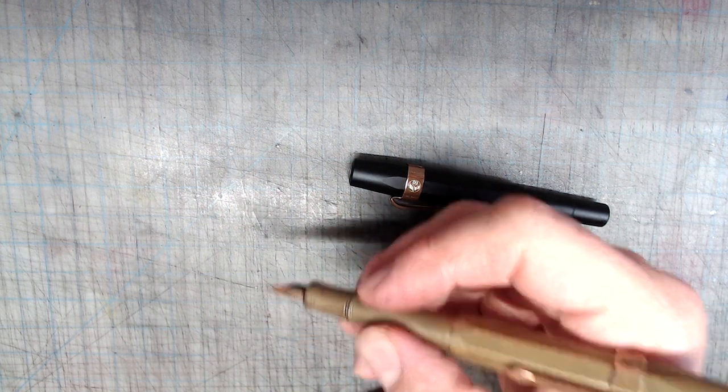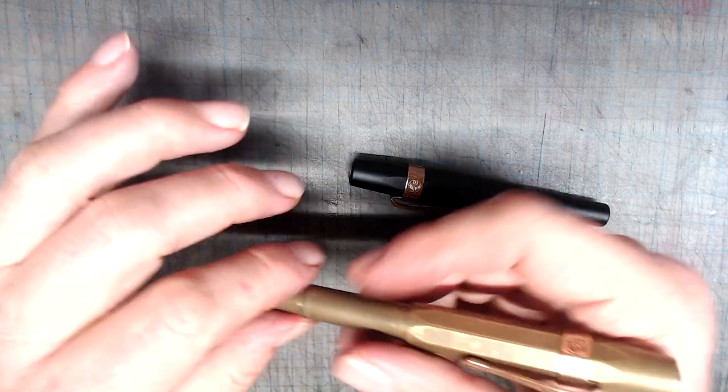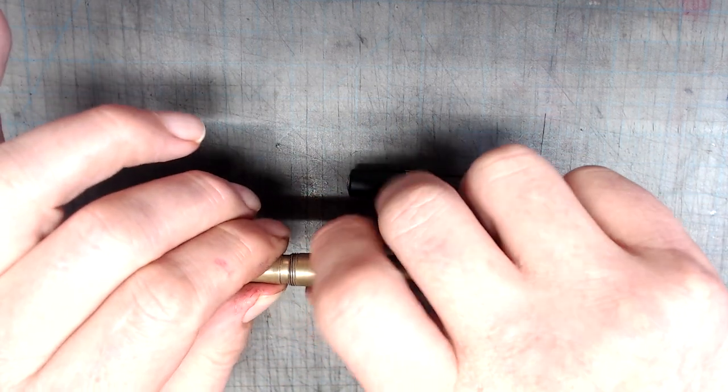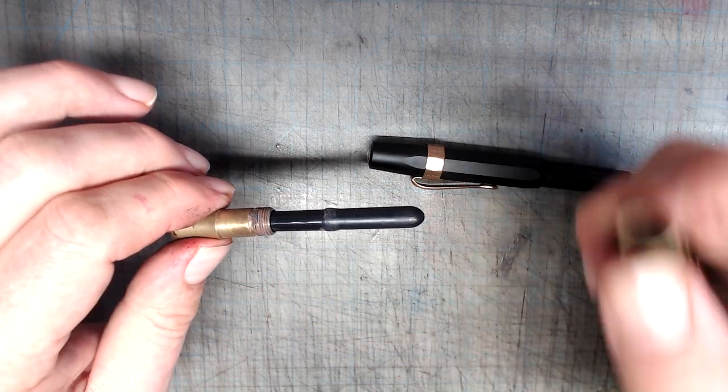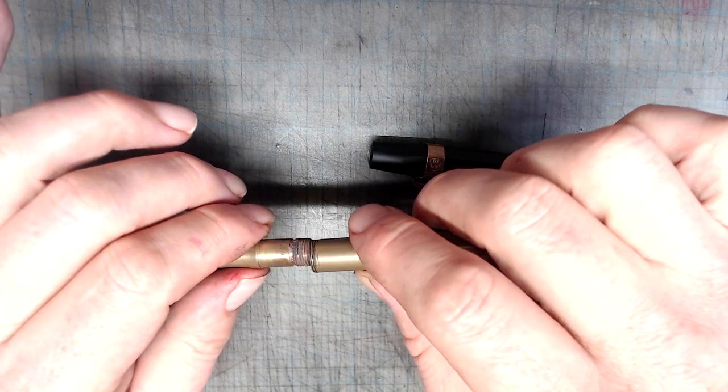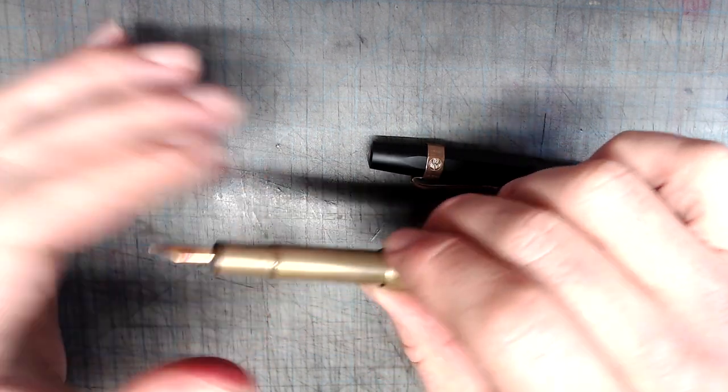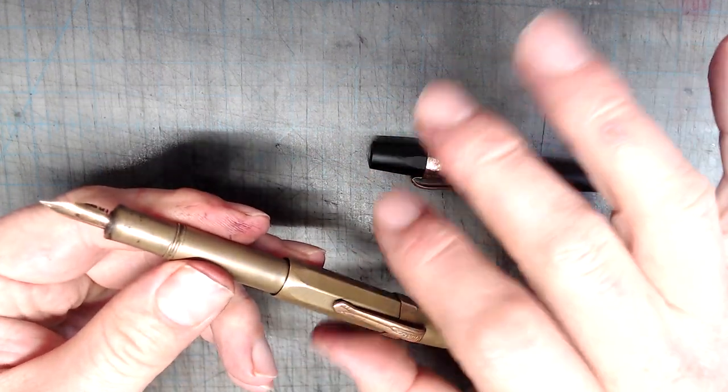The ink capacity on these is pretty poor, but again, carrying extra cartridges around isn't such a burden. And, if you go to my detailed review of the Kaweco Brass, I'll show you how to make this squeeze converter, which more than doubles the ink capacity. The nibs of these are exactly the same as the one on the Lilliput, so I'm not going to give you a test. But, to summarize, they put down a very thin, consistent line, are pretty stiff, and nothing particularly special.